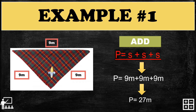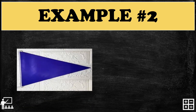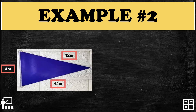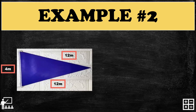Let's try another example. Here we have a banderitas, which is triangle in shape. As you can see, one side of this triangle is different from the others. A triangle has different types depending on sides or angles, and in this image the type of triangle is an isosceles triangle.